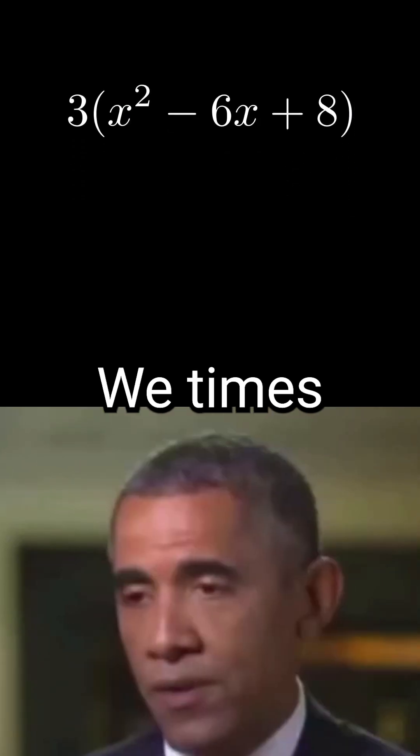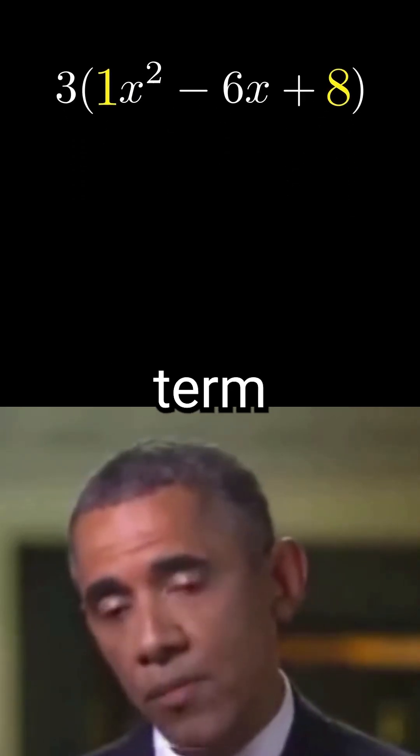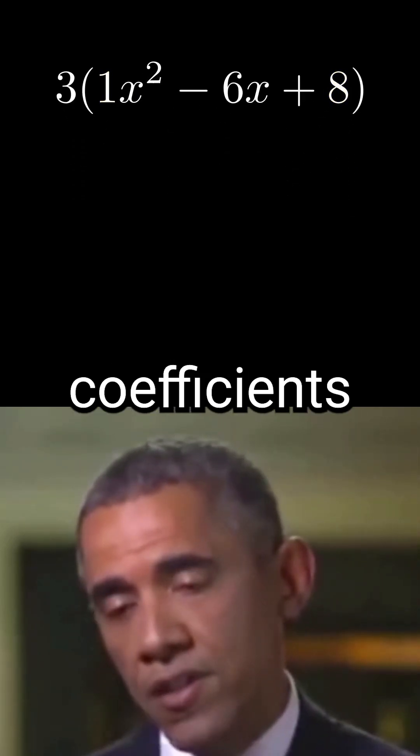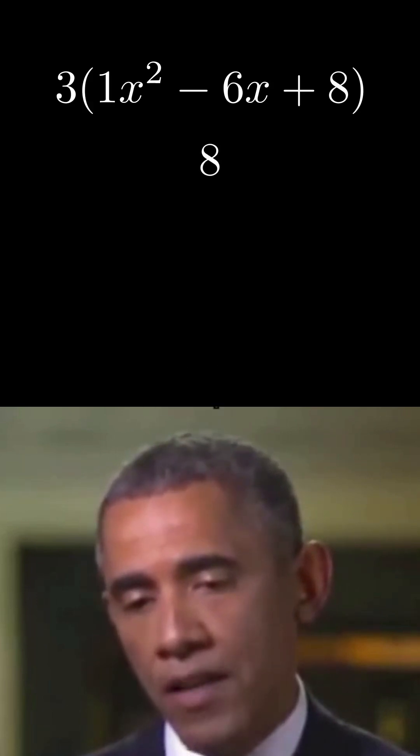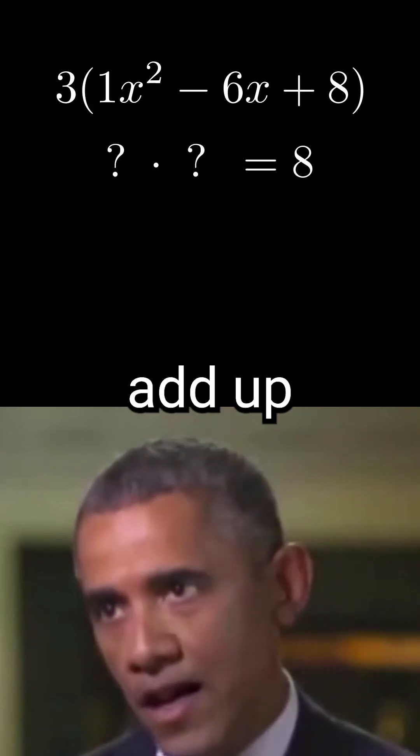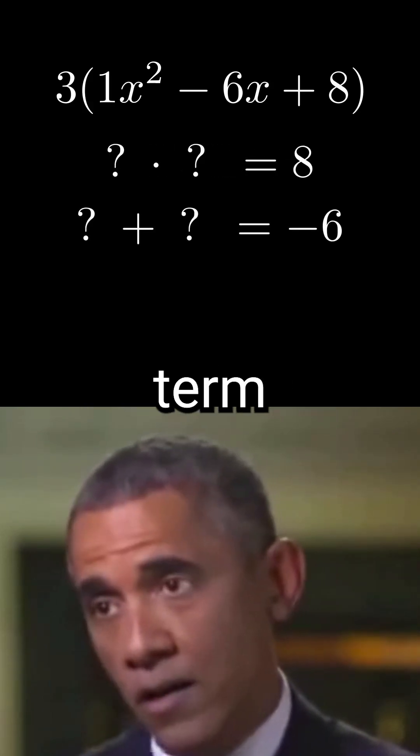For this part, the process is as follows. We times the coefficients of the first and third term together. And so whenever we multiply the coefficients of the first and third term, we get 8. So now we want to find factors of 8 that add up to the coefficient of our middle term, negative 6.